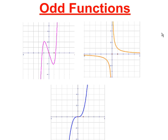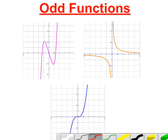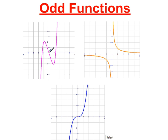Odd functions all have one thing in common, and you can see it in each one of these graphs. An odd function will always have rotational symmetry around the point (0, 0). That's a point symmetry where if I rotate the graph 180 degrees — like flipping it upside down — I get back the same exact line or curve that I started with.